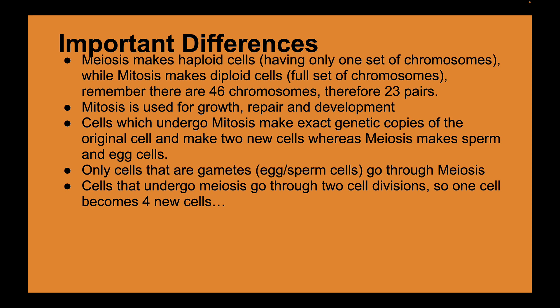Mitosis is used for growth, repair, and development. Cells that undergo mitosis make exact genetic copies of the original cell and produce two new cells. Meiosis, on the other hand, makes sperm and egg cells — only gametes go through meiosis — and cells undergoing meiosis go through two divisions, so one cell becomes four new cells.